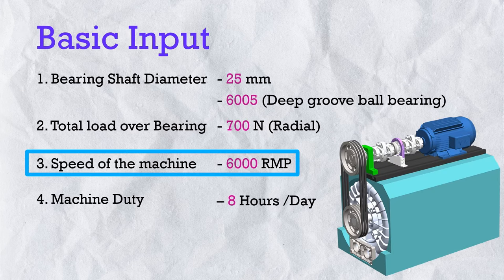In our application, the load is pure radial on a radial bearing, so P = FR = 0.7 kN. Substituting into the formula: L10 = (11.9/0.7)^3 = 4,913 million revolutions.